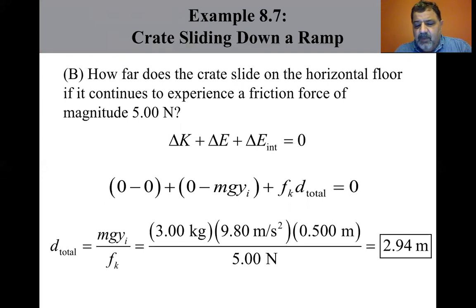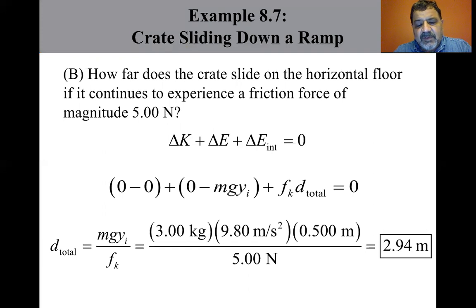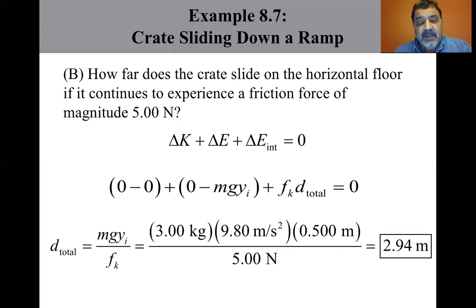For comparison, you may want to calculate the speed of the crate at the bottom of the ramp in the frictionless case. Notice that the increase in internal energy for the entire motion is f_k times d equals 5 newtons times 1 meter equals 5 joules — this energy is shared between the crate and surface, each of which is a bit warmer than before. Also notice that the distance the object slides on a frictionless horizontal surface would be infinite.